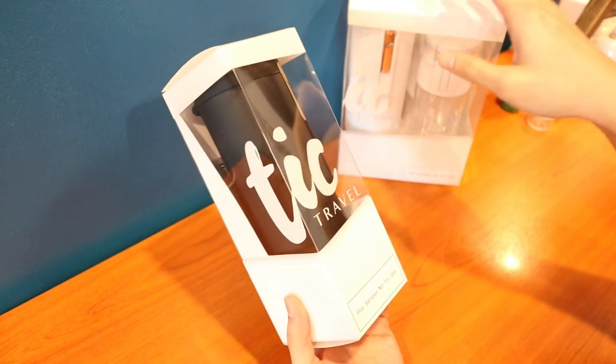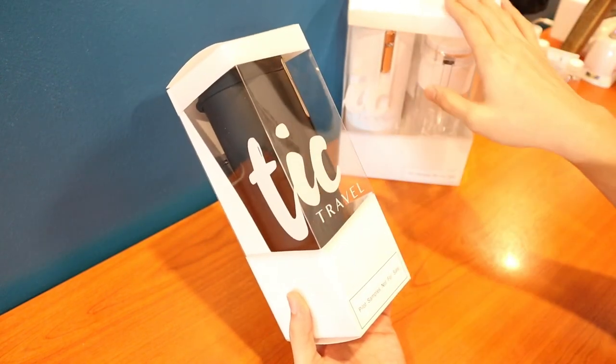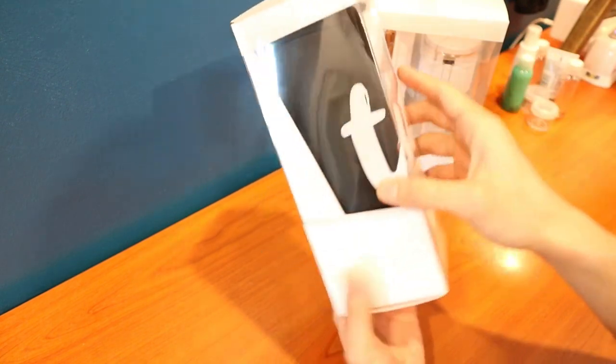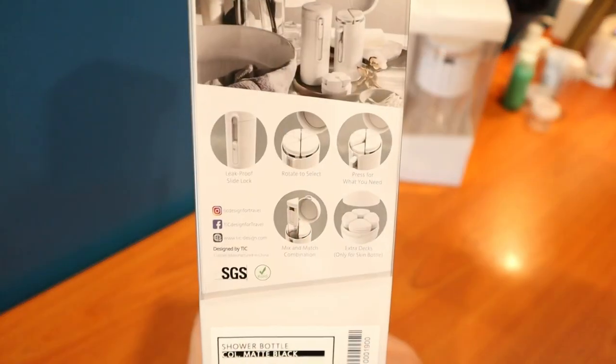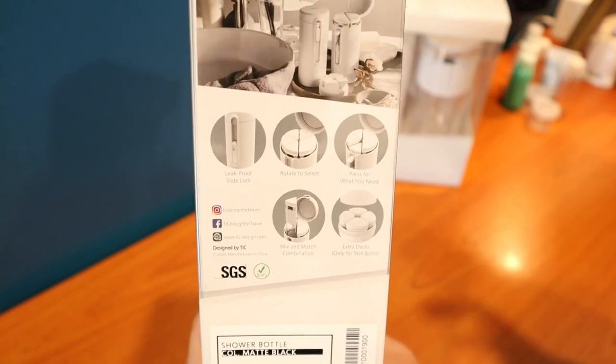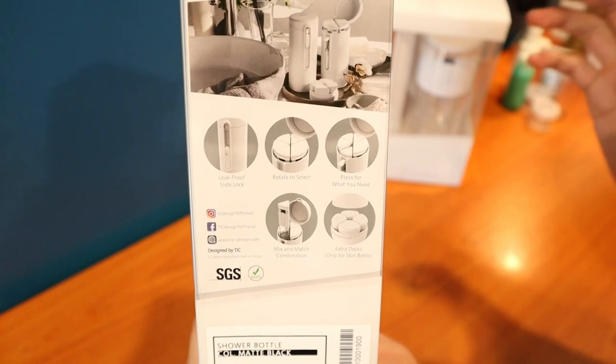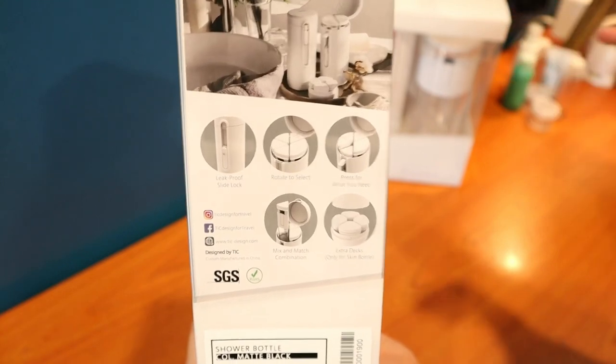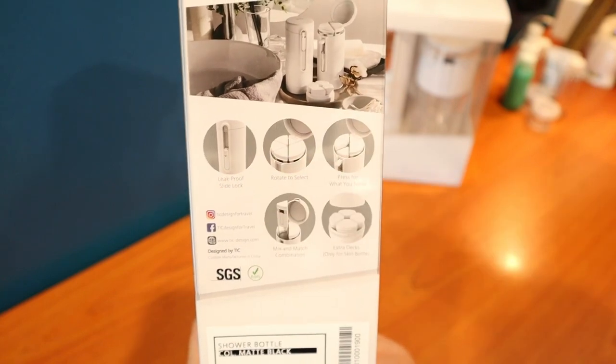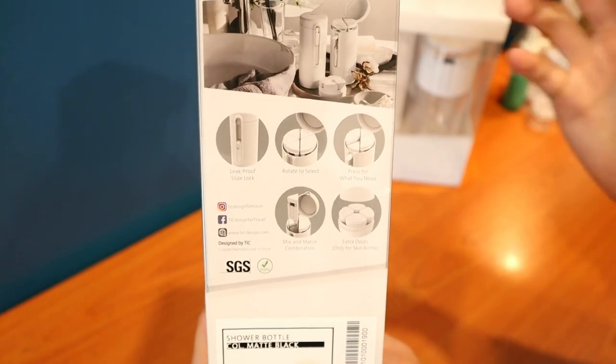Both variants come in black and white, but I am really digging this matte black and cool finish. Let's have a look at the features. First up, we have a leak-proof slide lock. One of your worst nightmares that can possibly happen to your toiletry bag is that if something leaks and it just goes everywhere. So with this, you have the assurance that if something happens, it's just going to be contained in the bottle.